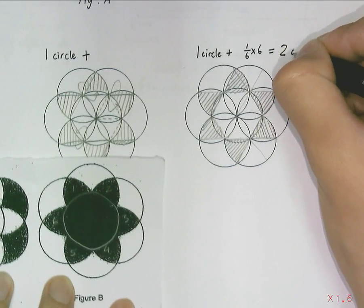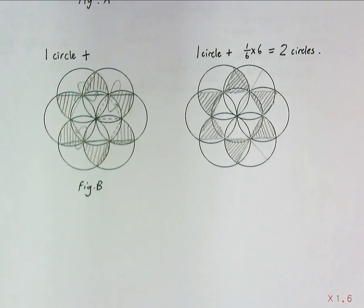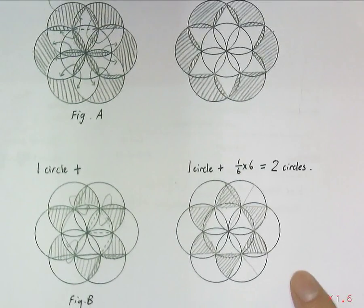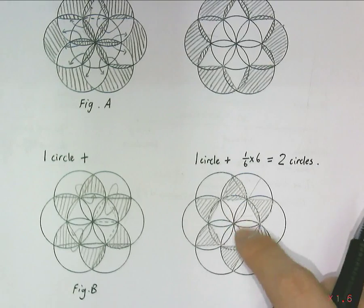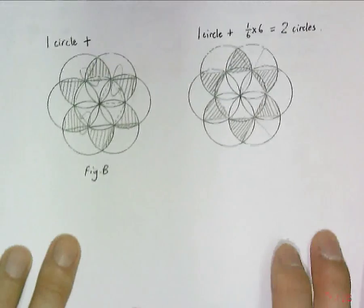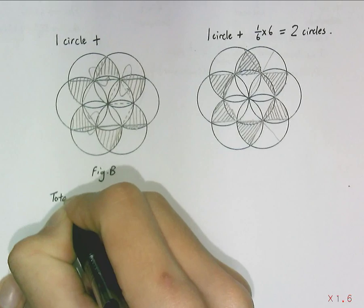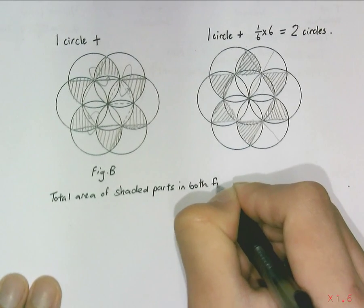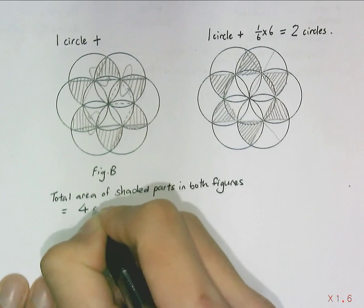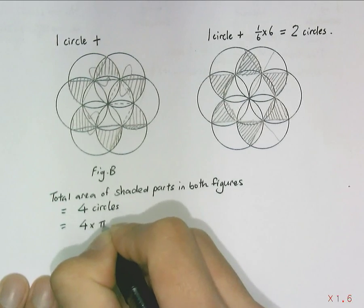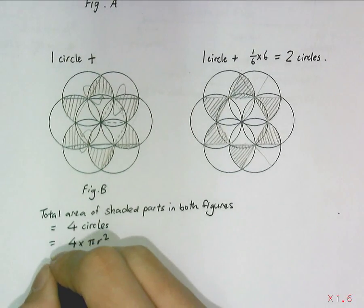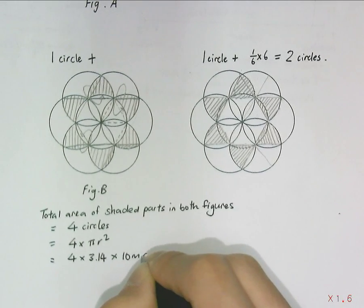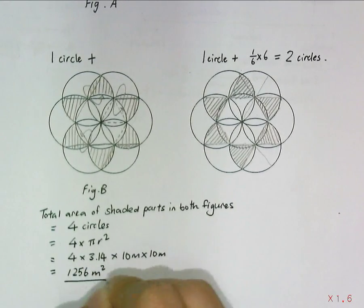The total for Figure B is equal to two circles of shaded parts. So Figure A consists of two circles, and Figure B also contains two circles, including the central shaded portion. The total area required is four circles — four pi r squared. Pi is given in the question as 3.14, and the radius of the circle is 10 meters, leaving the answer exact.